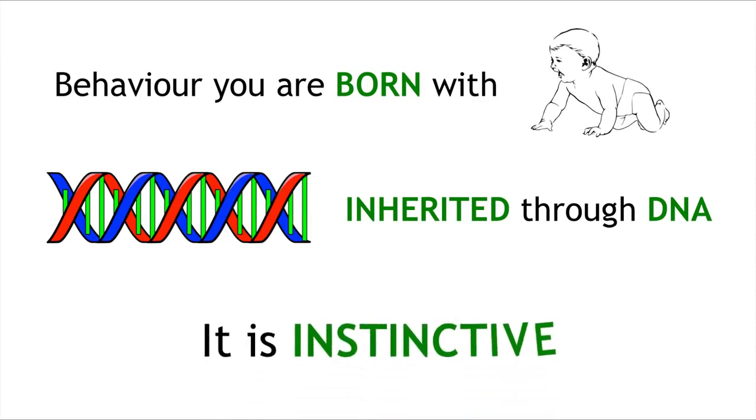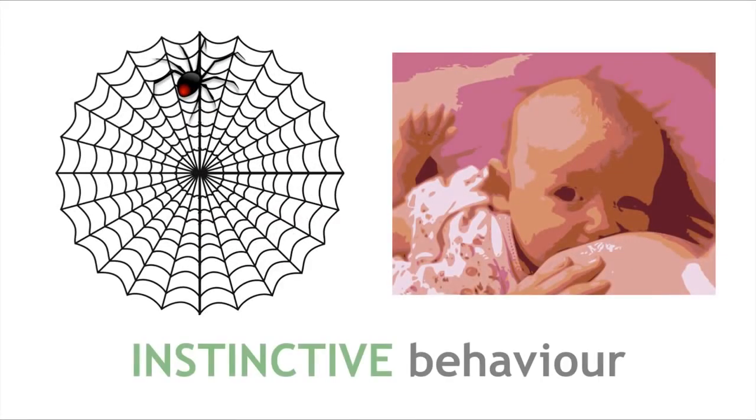For example, a spider knows how to spin a web as soon as it is born or a baby can suckle because it is instinctive.